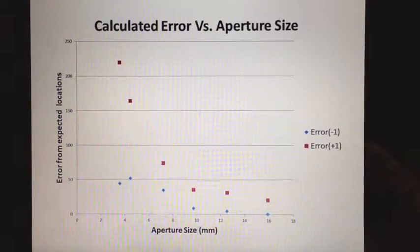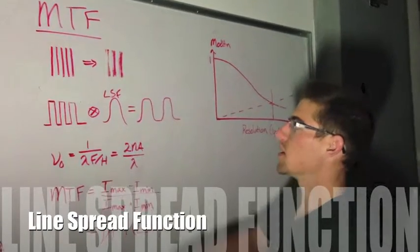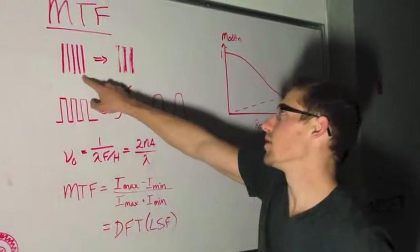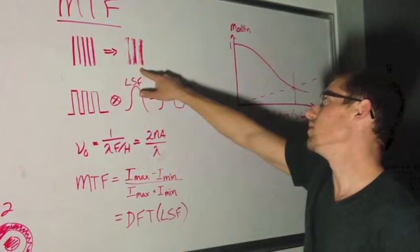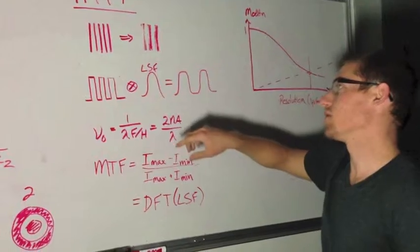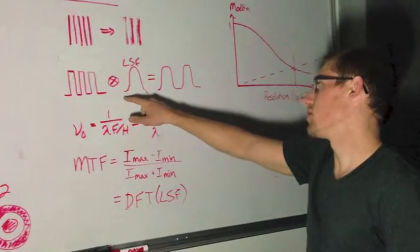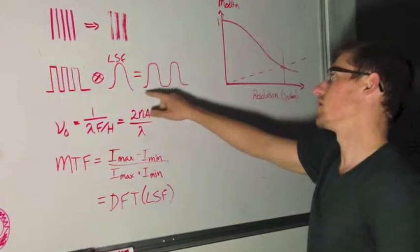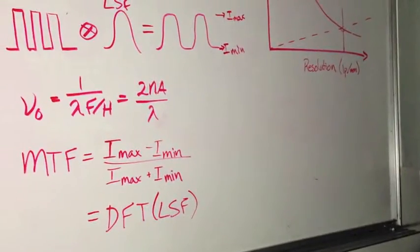Given a system with a particular MTF, we can see an input line image transform to a smooth output image. This is due to interactions with the line spread function. Given our input function convolved with the line spread function, we get the smooth output expected. The MTF determines which resolutions can be successfully imaged.